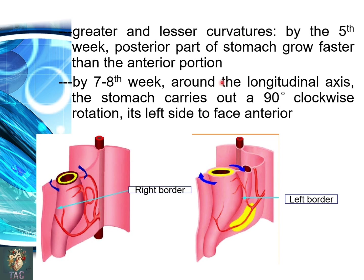Regarding the greater and lesser curvatures: by the fifth week of development the posterior part of the stomach grows at a faster rate than the anterior part. By 7 to 8 weeks, the stomach rotates 90 degrees clockwise around the longitudinal axis, causing its left side to face anteriorly. It rotates such that its right border moves posteriorly and its left border moves anteriorly.